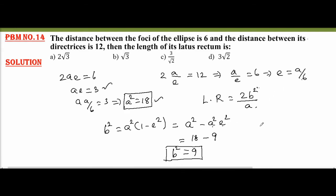So, now we'll find the length of latus rectum easily. Length of latus rectum equals 2 times 9 divided by a. A² is 18, so a equals √18, which is 3√2.